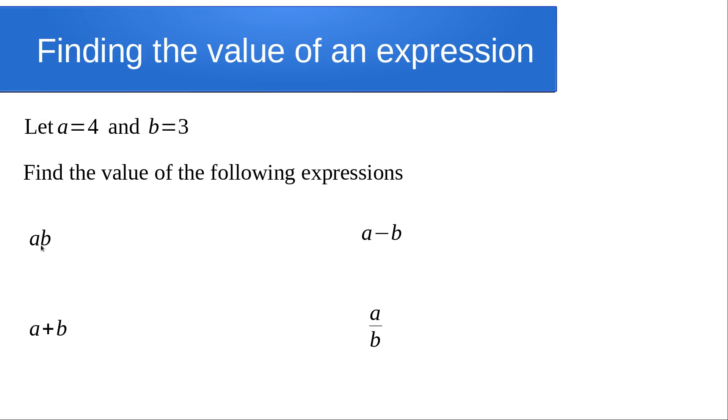So ab - we know from our work on notation that means a multiplied by b. If we put the values in, we have a is 4 and b is 3, so it's 4 multiplied by 3, which is 12.